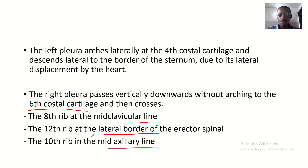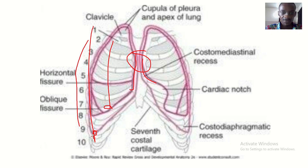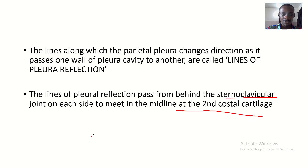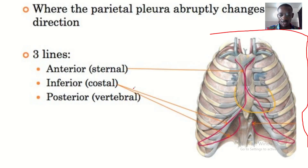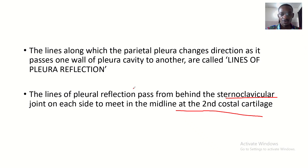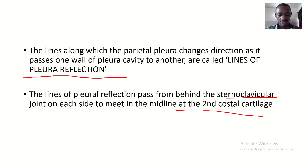This is the anatomy of the lines of pleural reflection — the lines along which the pleura changes direction as it passes from one wall of the pleural cavity to another. I think this is enough for this lecture; see you in the next tutorial.